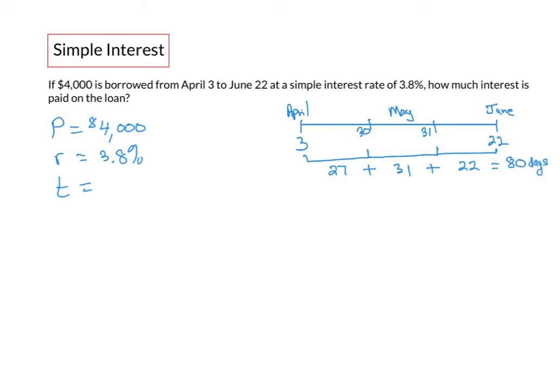There are other ways to calculate the number of days. You can use a date table. You can also use your calculator. But for now, we'll just use this method. So our time is 80 days.